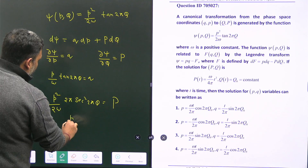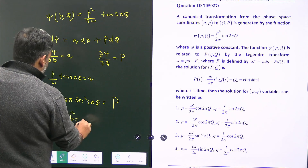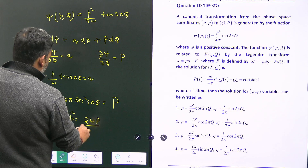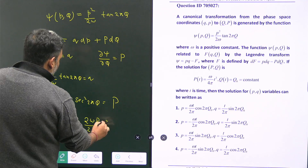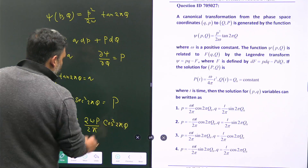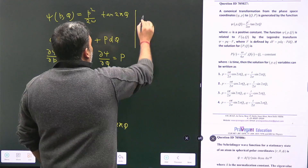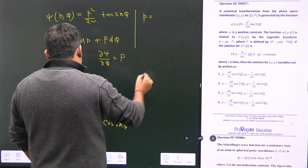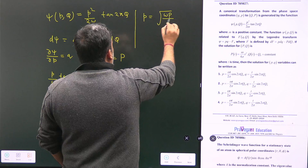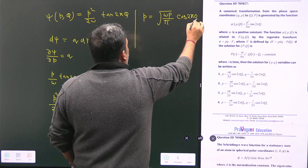From the second equation we can solve for small p. We get p² = 2ω · P · cos²(2πQ) / (2π), which gives us: small p = √(ωP/π) · cos(2πQ). This is the expression for the old momentum in terms of the new canonical variables.